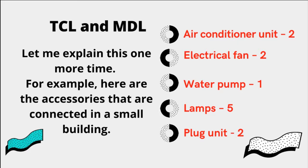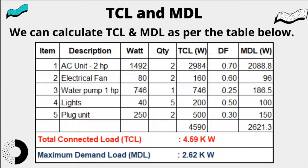Let me explain this one more time with an example. Here are the accessories connected in a small building: 2 Air Conditioner Units, 2 Electrical Fans, 1 Water Pump, 5 Lamps, and 2 Plug Units. We can calculate the MDL as per the table below.